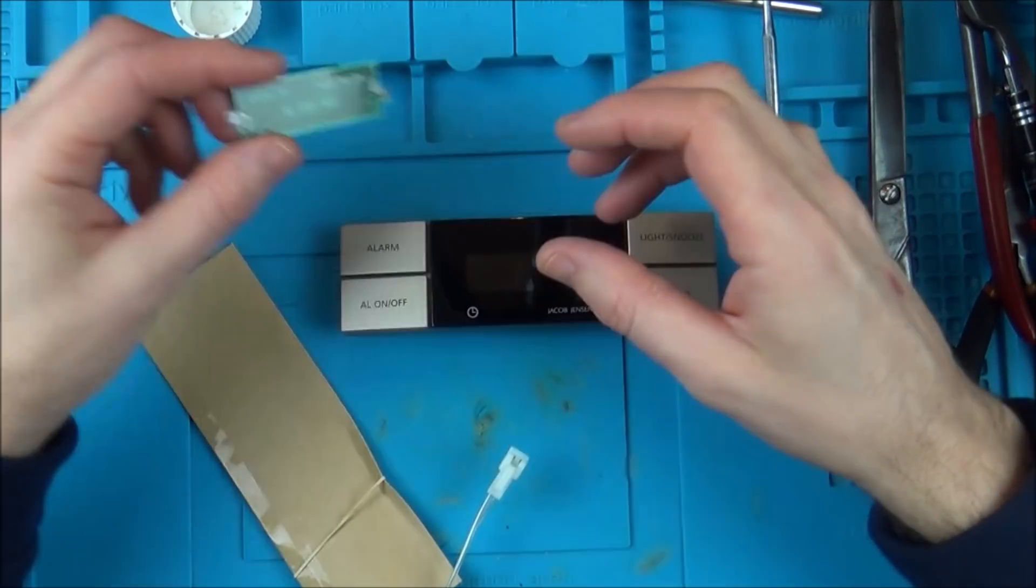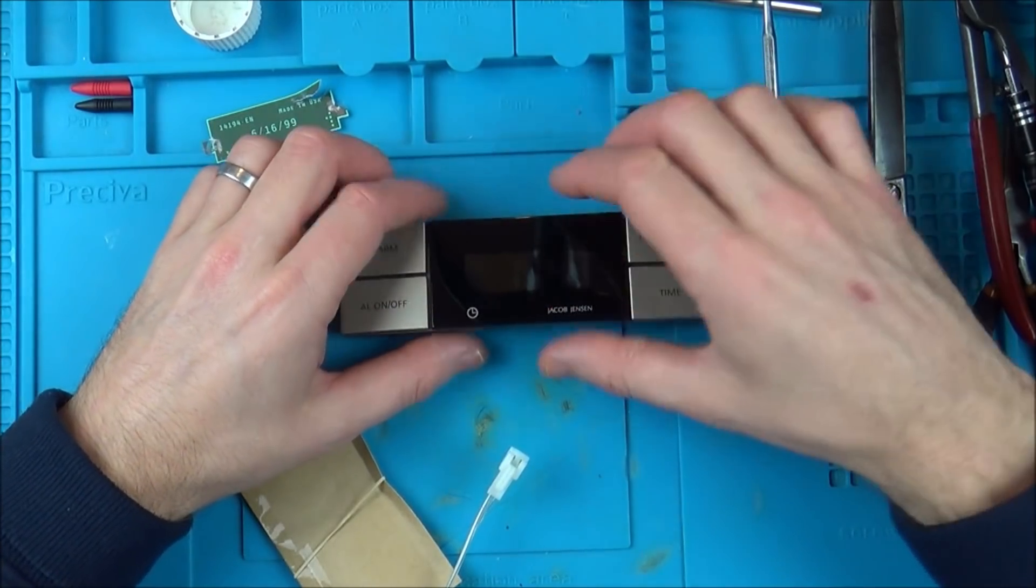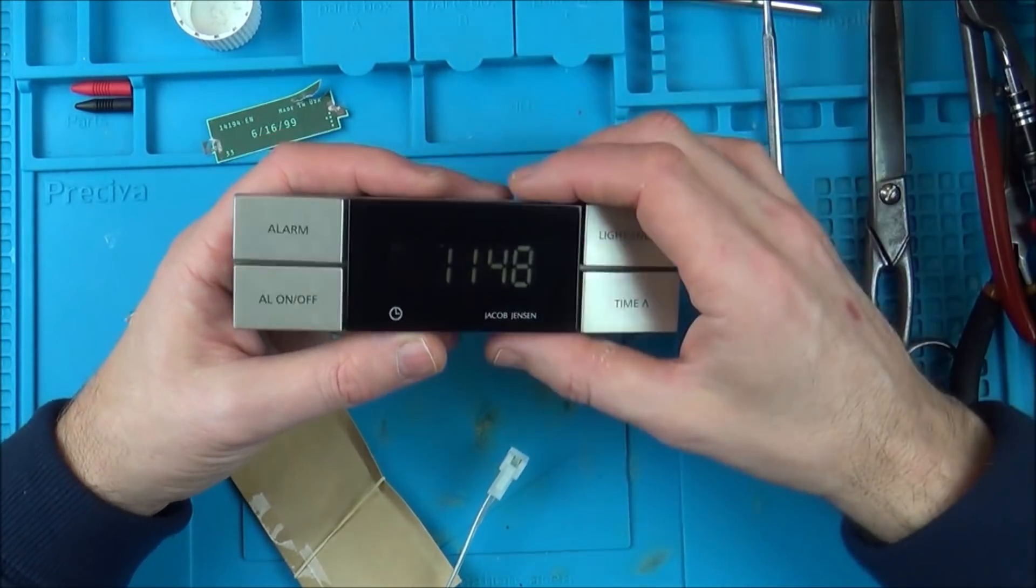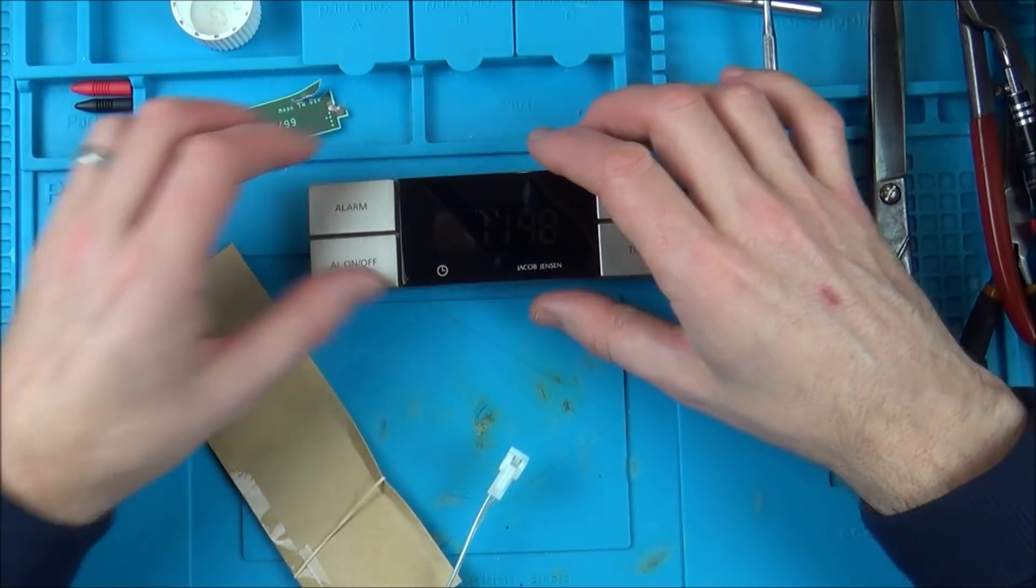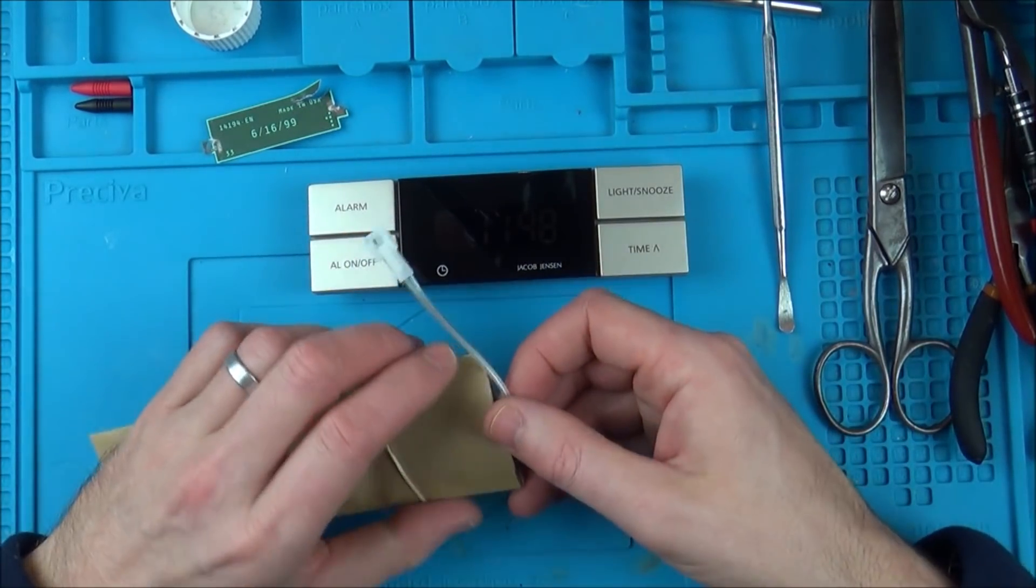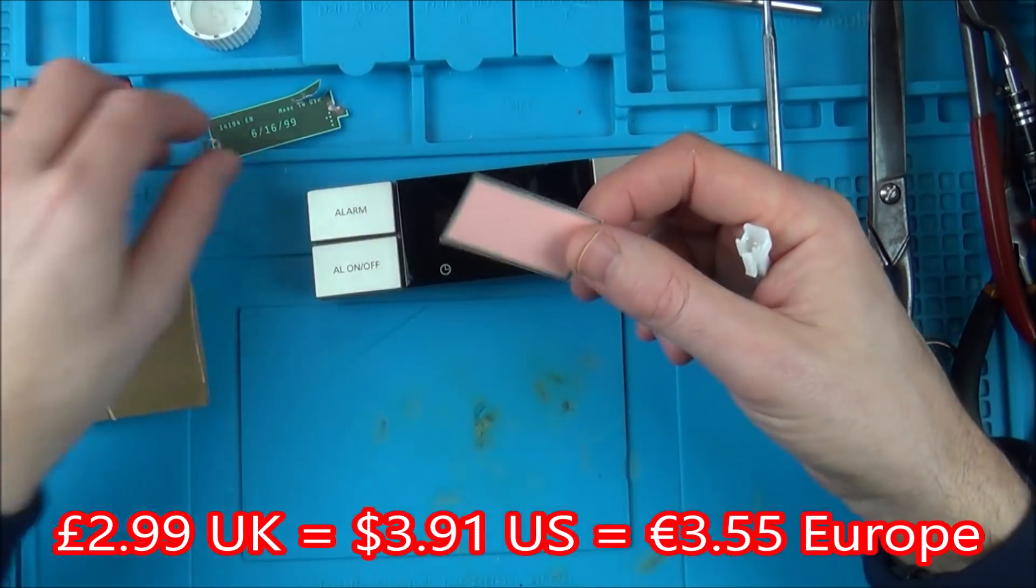Basically I proved that this one was faulty by taking a little EL panel out of a Timex Indiglo watch that my daughter had, and sure enough it lit up. So I left it at that but then quite a few people said why don't I buy a little EL panel and I found one on eBay for £2.99 so I did.